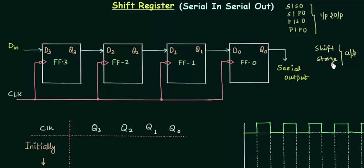Now we will study shift registers. The application is shifting and the input and output format is serial input, serial output. This serial input and serial output is divided into two types. The first one is shift right mode. I am calling it shift right because the data is input to the left flip flop and the stored value is shifted to the right, and finally we have our serial output. If you understand this circuit you can easily derive the shift left mode yourself.